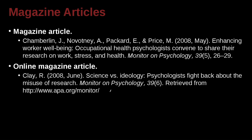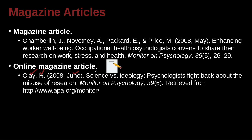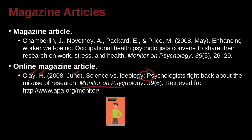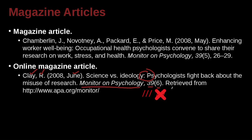Here's an online magazine that you don't get in print. So here we have the author's name, the first name initial, the year and the month, because it's a monthly magazine. Here is the name of the article: 'Science Versus Ideology,' and then here we have a colon and a capital after that: 'Psychologists Fight Back About the Misuse of Research.' Here is the magazine's name, and that's italicized. Comma, and then 39 is italicized. Six is not italicized.